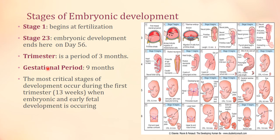The whole gestational period of nine months is divided into three trimesters of three months each. During this whole gestational period, the most critical stages of development occur during the first trimester — the first 13 weeks — when embryonic and early fetal development and organogenesis are taking place.